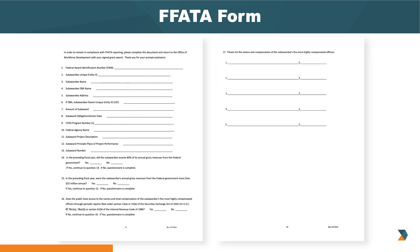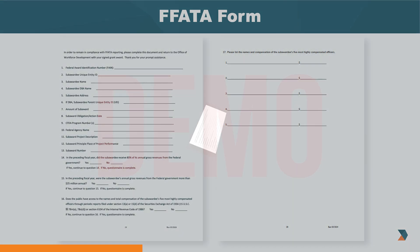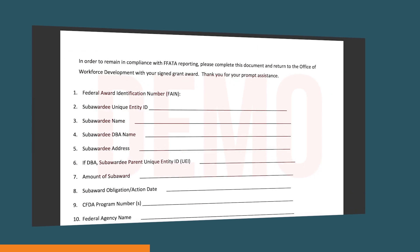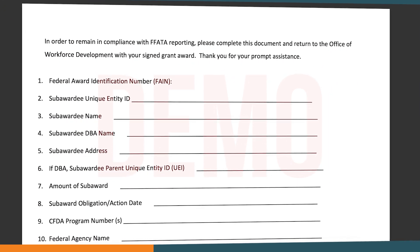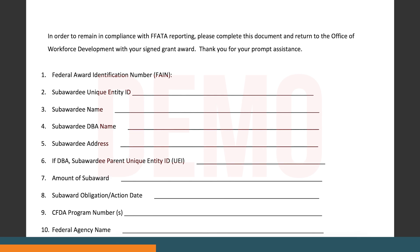To remain in compliance with FFATA reporting, it is required that LWDAs complete the following FFATA form located on the last two pages of the Statement of Grant Award and return it to the Office of Workforce Development with your signed grant award. For this demonstration, we will be using the former Local Area 10 as an example, based on the FY23 Dislocated Worker Grant. We will start by inserting the FAIN, the Federal Award Identification Number. The FAIN can be found on the first page underneath the grant name.